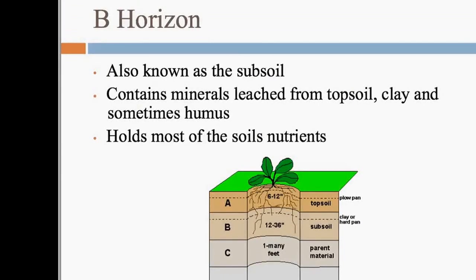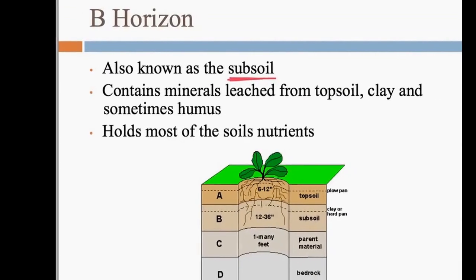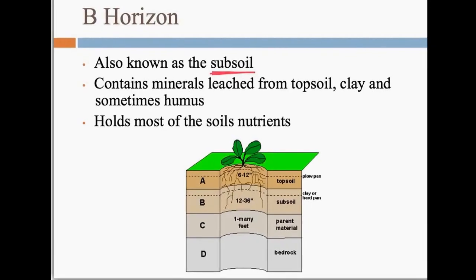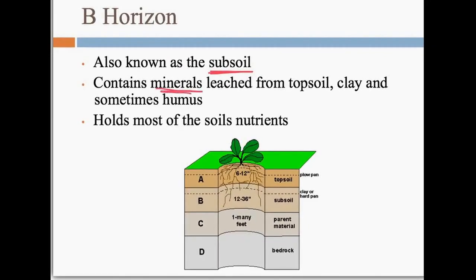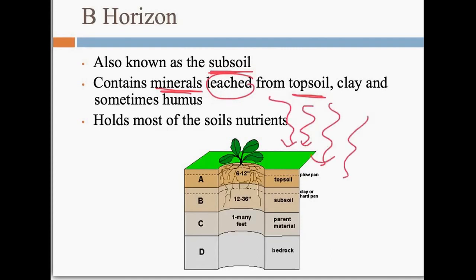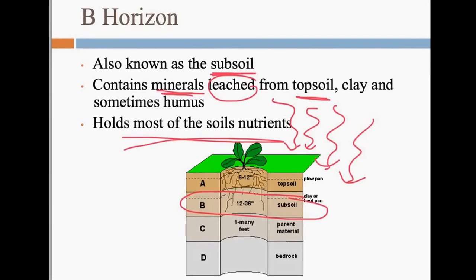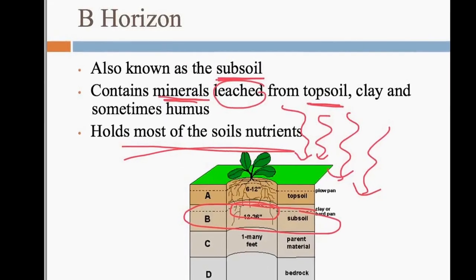The B horizon is also known as the subsoil, and the B horizon is known for all the minerals it contains. When it rains, minerals are leached from the topsoil and go into the B horizon. So our B horizon contains most of the soil's nutrients. You can see the roots of the plant actually penetrate it, which is really good for the plant.